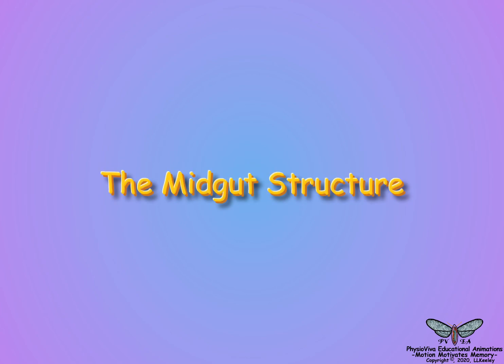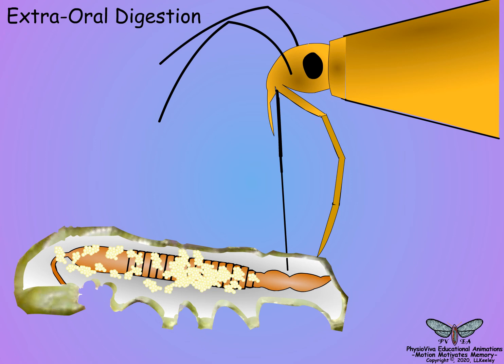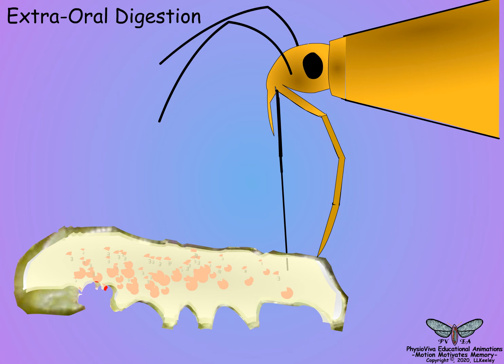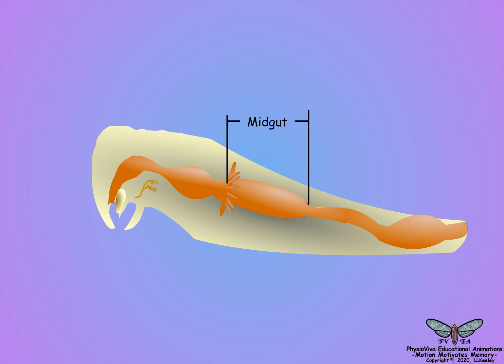This scene will describe the structure of the insect midgut. In some predaceous insects with piercing sucking mouthparts, extraoral digestion occurs by injecting digestive enzymes into the prey and then drawing back the liquefied tissue along with the enzymes. But in most insect species, the midgut is the primary region for food digestion and nutrient absorption. Let us look at the organization of the midgut.